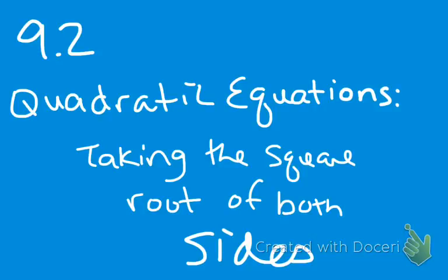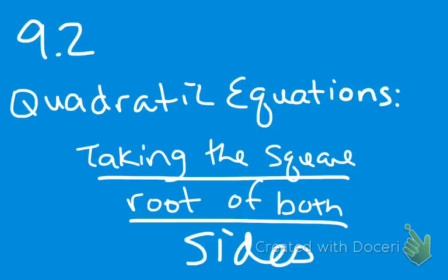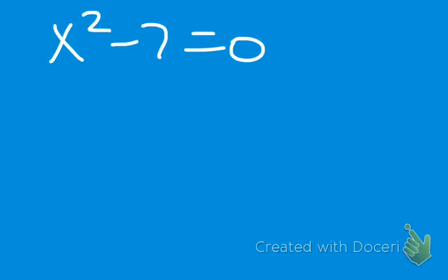All right, we're going to be doing quadratic equations. We're going to be solving them. We've been solving quadratics by factoring them and then doing the zero property. But today we're going to be taking the square root of both sides to do that. And so we're going to get started with one.